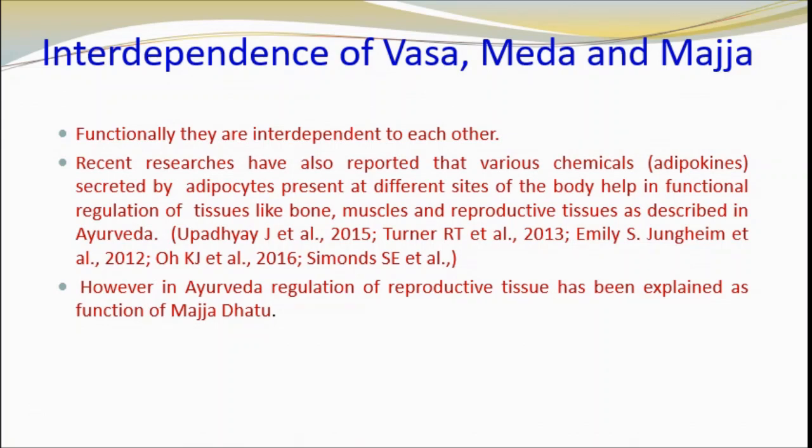Functionally, Vasa, Medha and Majja are interdependent. Recent researches have reported that various chemicals secreted by adipocytes present at different sites of the body help in functional regulation of tissues like bone, muscles and reproductive tissues, as described in Ayurved. In Ayurved, regulation of reproductive tissue has been explained as a function of Majja Dhatu. Recent studies have reported evidence of induced spermatogenesis from bone marrow adipocytes in azoospermic hamsters.